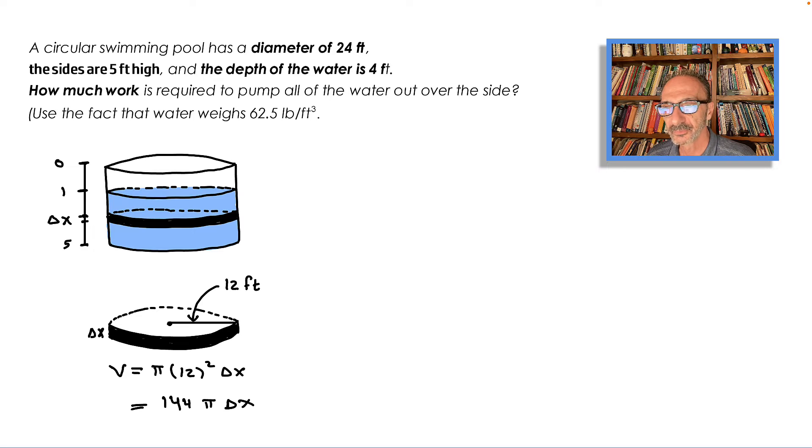Let's get started. As you can see from the graph that I have, we have the swimming pool which is a circular swimming pool with the diameter of 24, so the radius from this point to this point is 12 feet. The sides are 5 feet high. The depth of the water is 4, which leaves us with 1 on top.